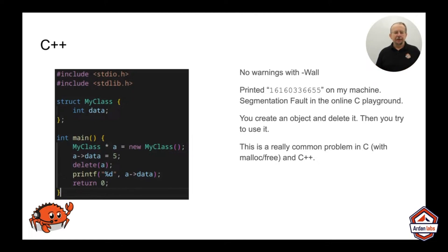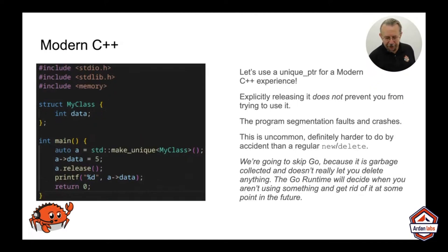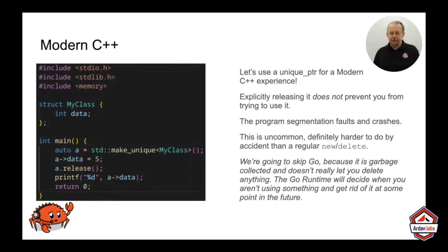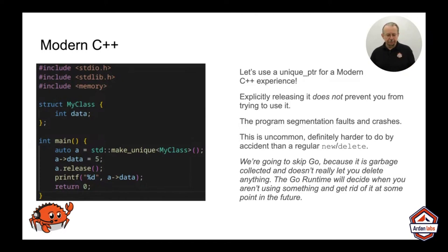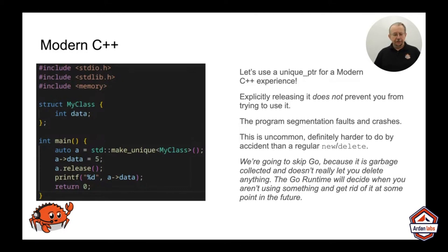If you go through the bug list history for Mozilla, you can see why it inspired some of them to come up with Rust. In C++, you can use unique_pointer to guarantee that RAII won't let you forget to delete. You set data to 5. Most of the time you will never call the release function, but you can.